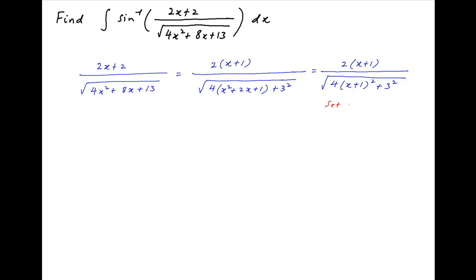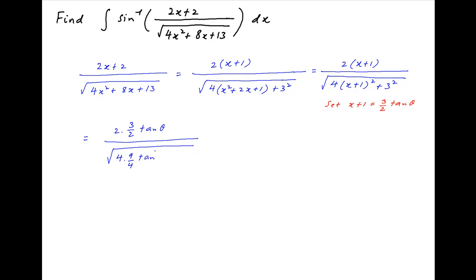Now set x plus 1 equal to (3/2) tan θ. Therefore this expression simplifies to 2 times (3/2) tan θ in the numerator, divided by square root of 4 times (9/4) tan²θ plus 3 squared. This simplifies and we get 3 tan θ divided by square root of 3 squared multiplied by (1 plus tan²θ).